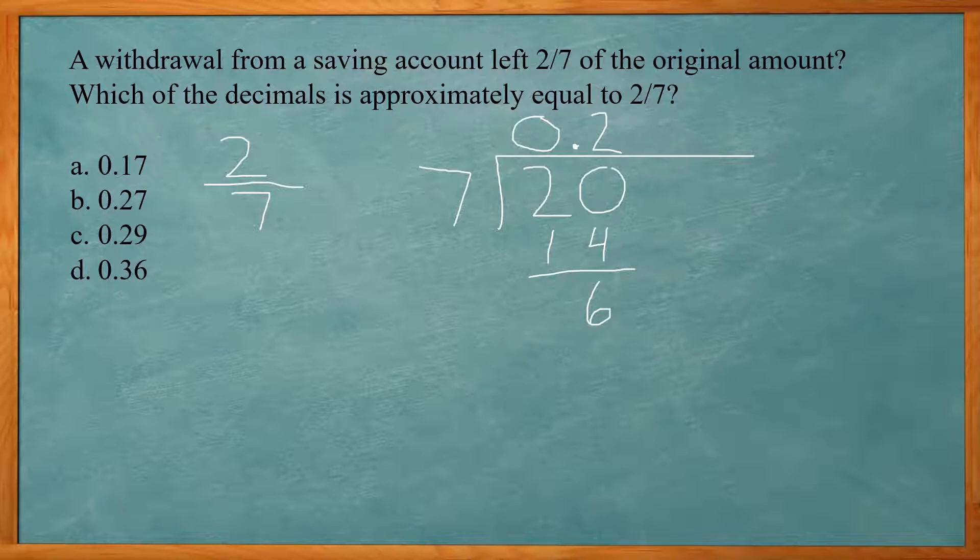So we look at our answer choices. They go to two decimal places. So we need to go to three decimal places so we can end up rounding. So now here, I need to tack on another zero and bring that down. So how many times does seven go into 60?